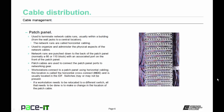Patch panels are used to terminate network cable runs, usually within a building — from the wall jacks to a central location. The network runs are called horizontal cabling. Patch panels are used to organize and administer the physical aspects of the network cables. Network runs are punched down to the back of the patch panel, which normally contains either a 66 or a 110 block, with an associated port on the front. Patch cables are used to connect the patch panel ports to networking gear, quite often a switch.